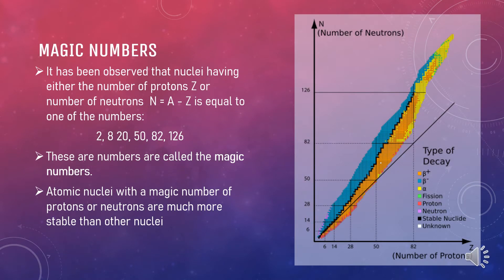It has been observed that if a nuclei having either the number of protons or number of neutrons that is equal to one of the numbers 2, 8, 20, 50, 82, and 126 is called the magic numbers. These atomic nuclei that have magic number of protons or neutrons are much more stable than other nuclei.